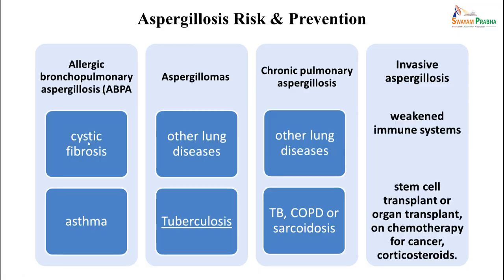Risk factors: ABPA is associated with asthma; aspergilloma occurs in pre-existing lung disease such as tuberculosis; chronic pulmonary aspergillosis is associated with TB and COPD. Invasive aspergillosis occurs mainly in patients with weakened immune systems due to stem cell or organ transplant, chemotherapy, steroids, or cancer treatment. Knowing these risk factors helps in preventing and monitoring for these diseases.